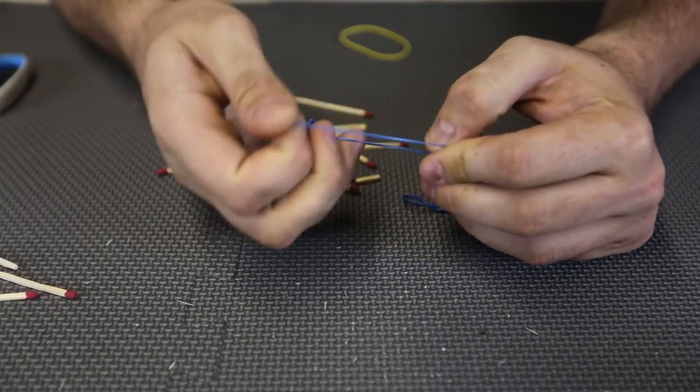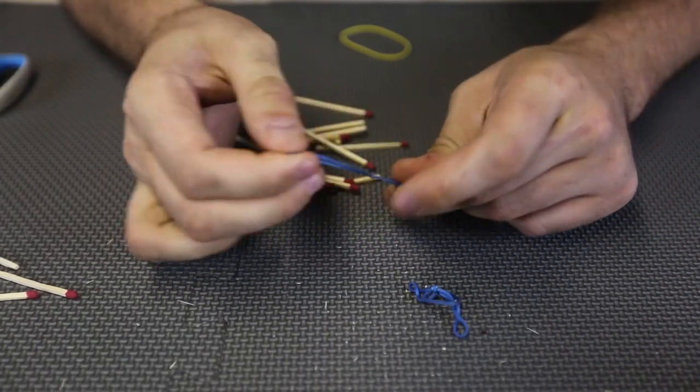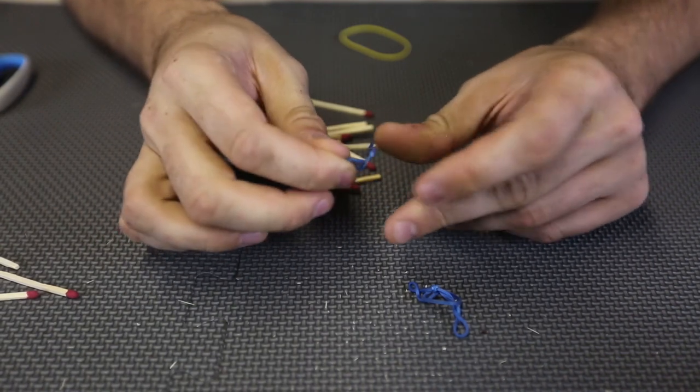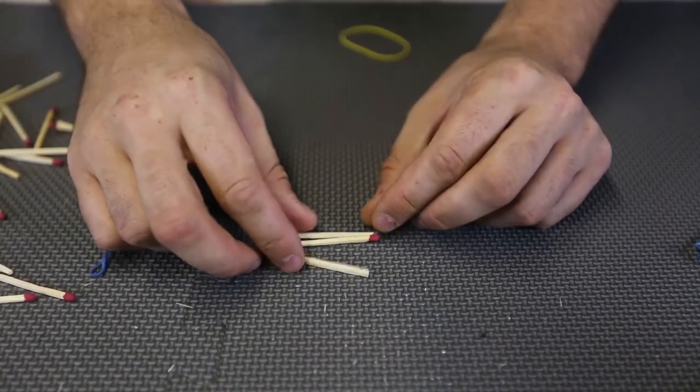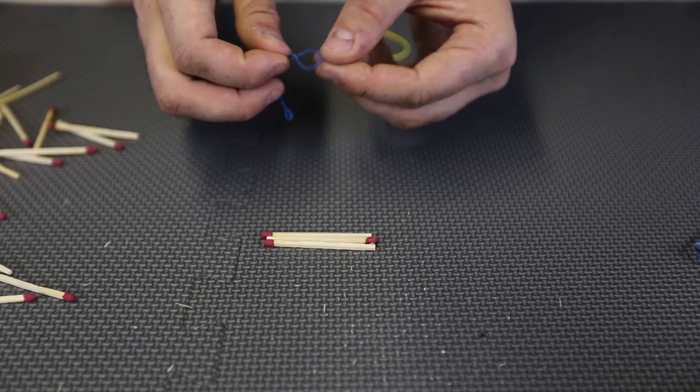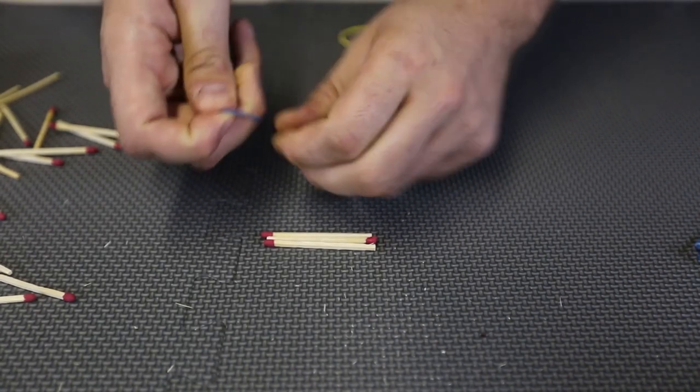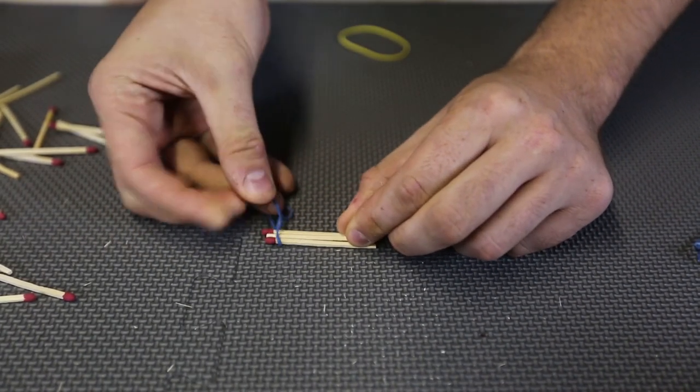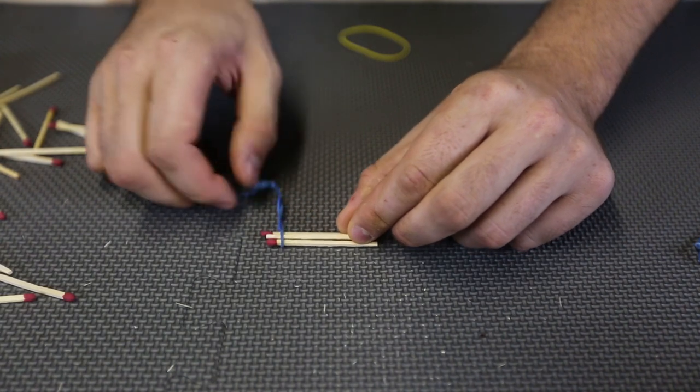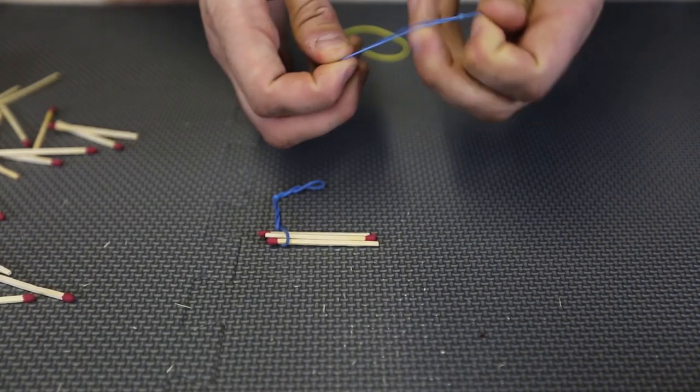So what you want to do is get a couple of small rubber bands. If you don't have small rubber bands, tie them like this to make them smaller. We're going to get three matches and lay them like this. Then we're gonna need a rubber band and we're gonna put a rubber band on this side and a rubber band on this side.